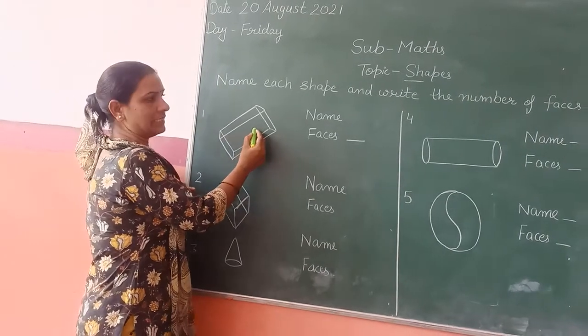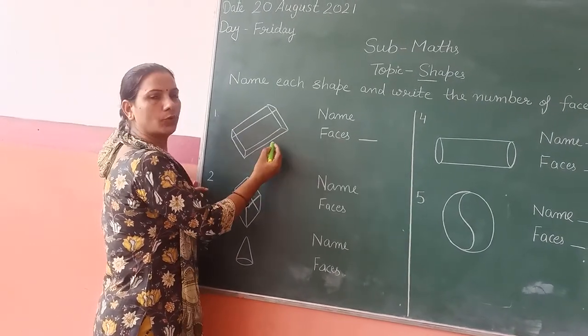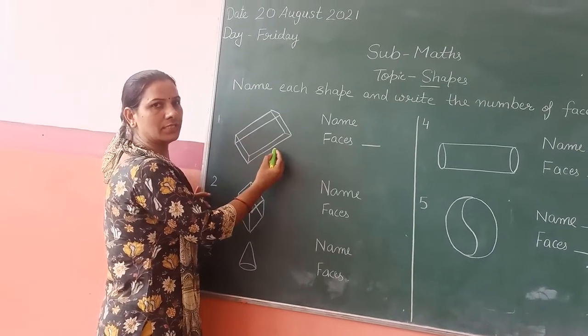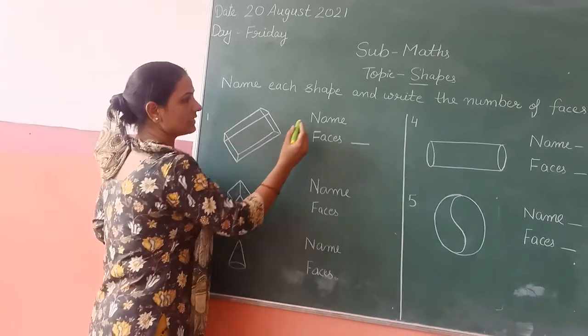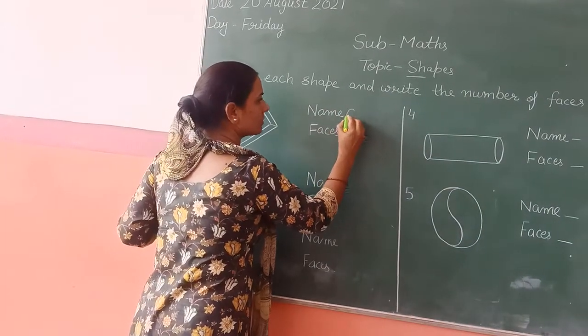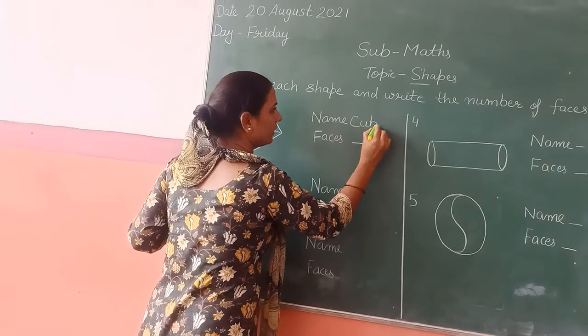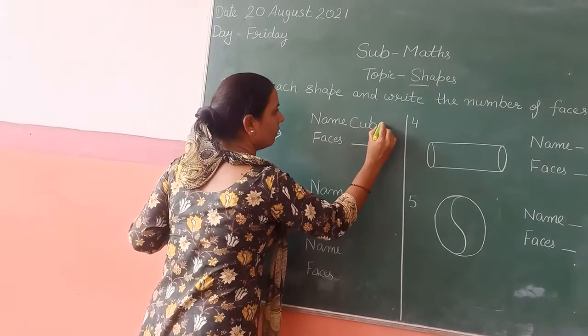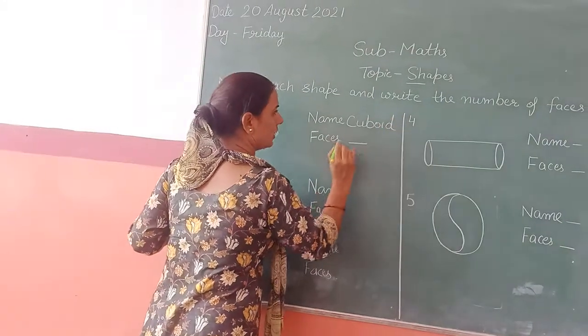So, what is this? This is a cuboid. This is a cuboid. Hama insta nama karnye hai - C, U, B, O, I, D. Ok?